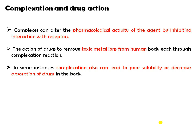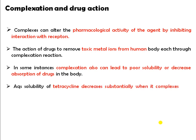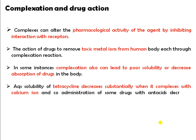In some instances, complexation can also lead to poor solubility or decreased drug absorption in the body. If an individual drug has very good solubility but its complex form has less solubility, then the complexation process ultimately decreases solubility and decreases its absorption into the gastrointestinal tract. For example, the active solubility of tetracycline decreases substantially when it complexes with calcium ion.